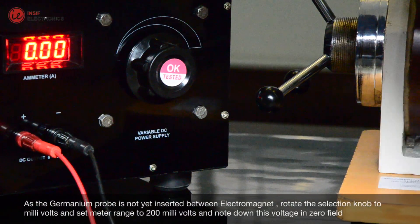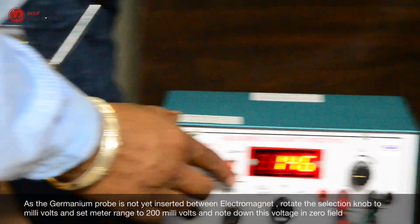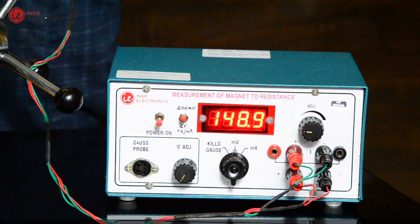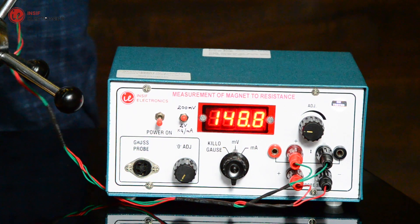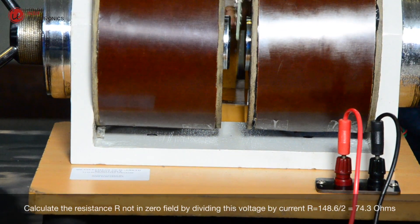As the germanium probe is not yet inserted between the electromagnet, rotate the selection knob to millivolts and set the meter range to 200 millivolts, and note down this voltage in zero field. Calculate the resistance R in zero field by dividing this voltage by current.